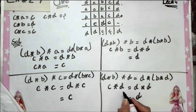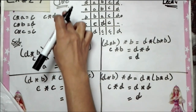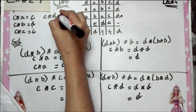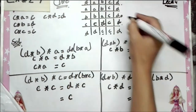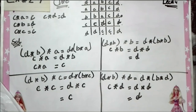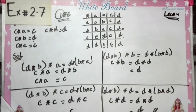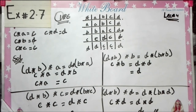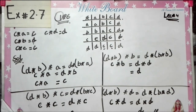So we write C★D in the table. This completes our question number 6. I hope you understood — if you have any confusion, please ask. If you liked the video, please like and subscribe. Thank you so much for watching. Allah Hafiz.